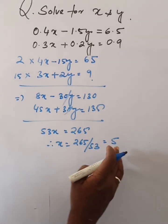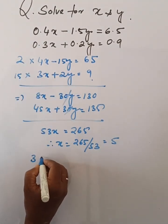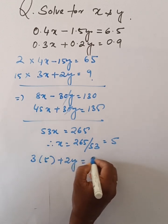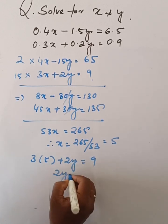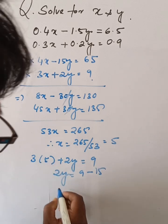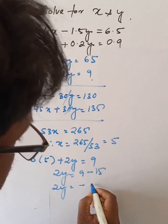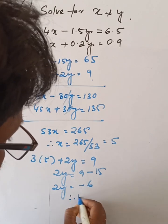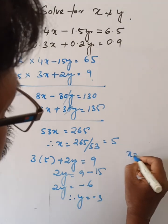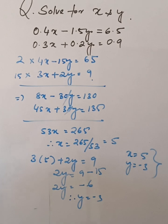Then, keeping this value in equation 2, we can write 3 into 5 plus 2y is equal to 9. So 2y is equal to 9 minus 15, that is 2y is equal to negative 6, therefore y is equal to minus 3. x is equal to 5, y is equal to minus 3 are the answers.